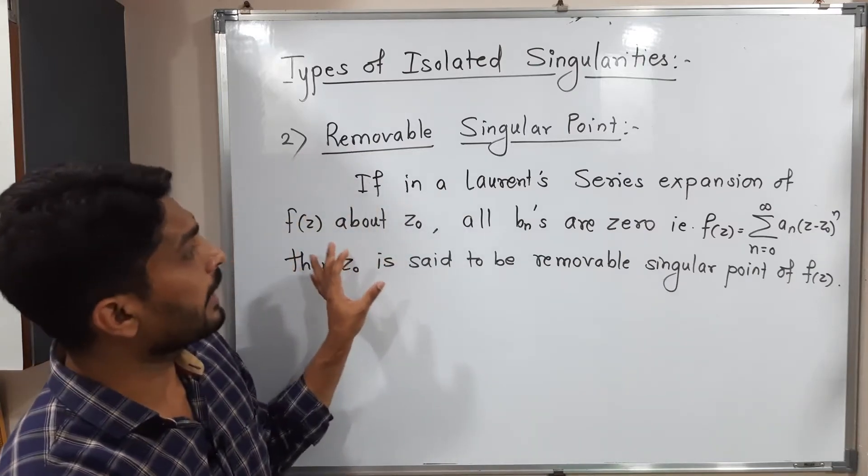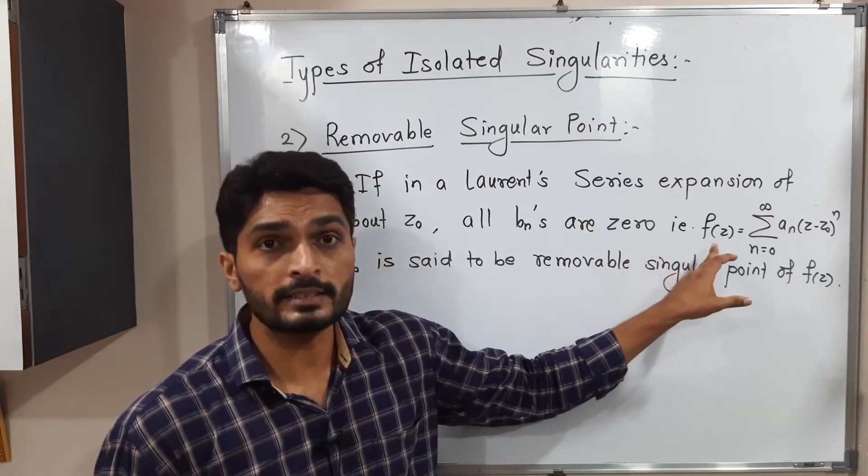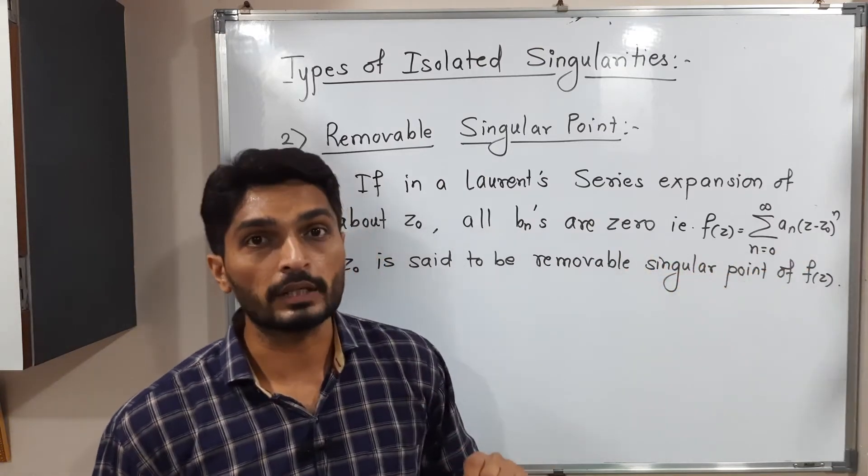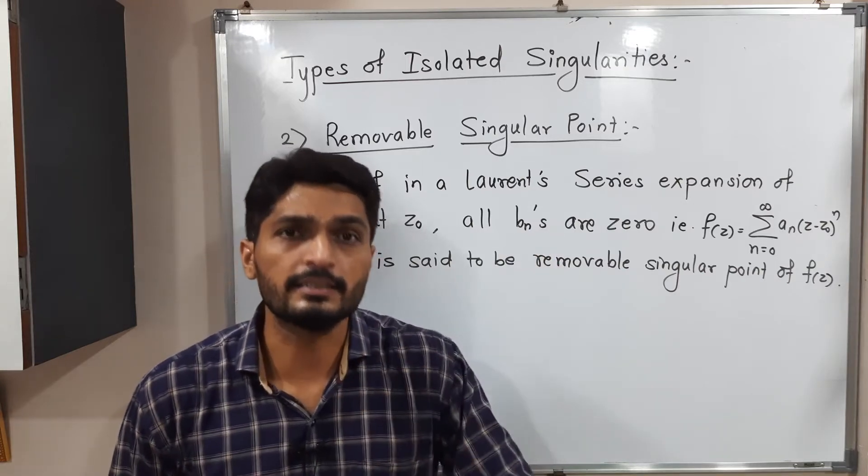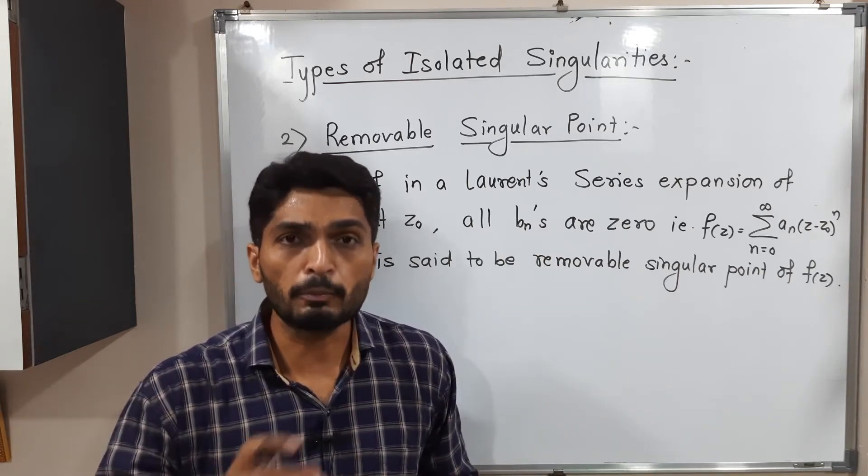That means the Laurent series expansion has no principal part. The principal part is zero. That means all Bₙs are zero. Then we call it a removable singularity.